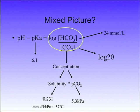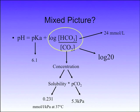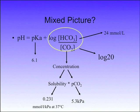What's the log of 20? There's a trick here — it's 1.3. How come? Because 6.1 plus the log of 20 must add up to the normal pH of 7.4.